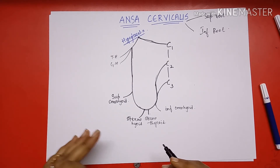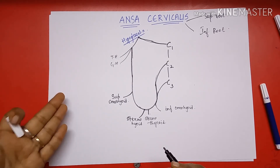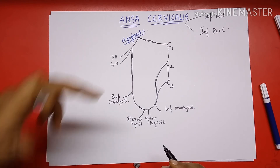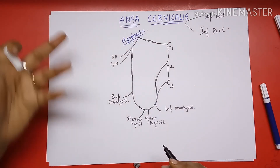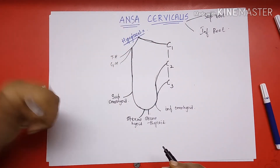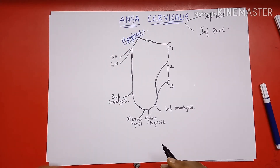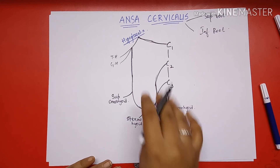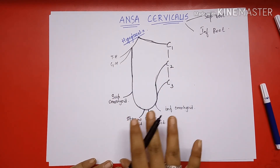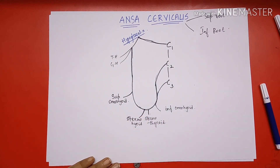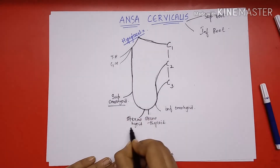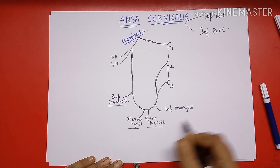The thyrohyoid and geniohyoid are not supplied by ansa cervicalis — they are supplied by a separate branch arising from C1 itself through the hypoglossal nerve. So ansa cervicalis supplies only four different muscles, and it has four different branches.